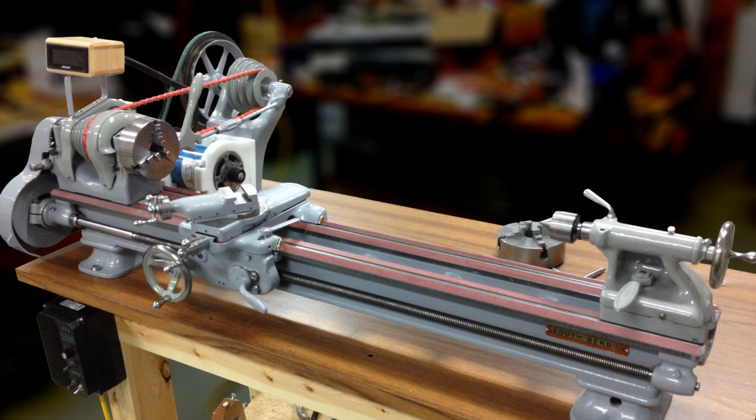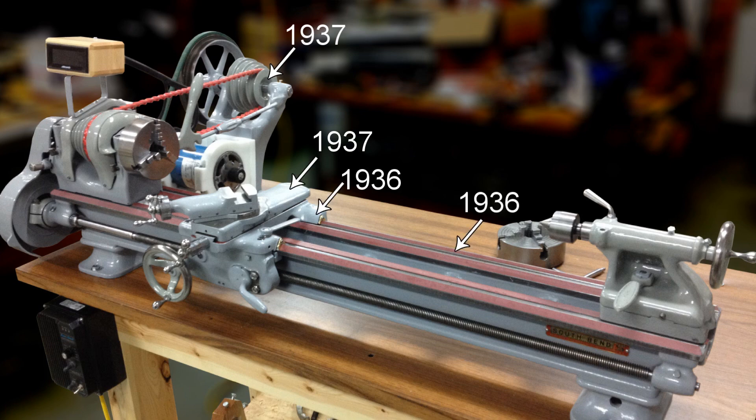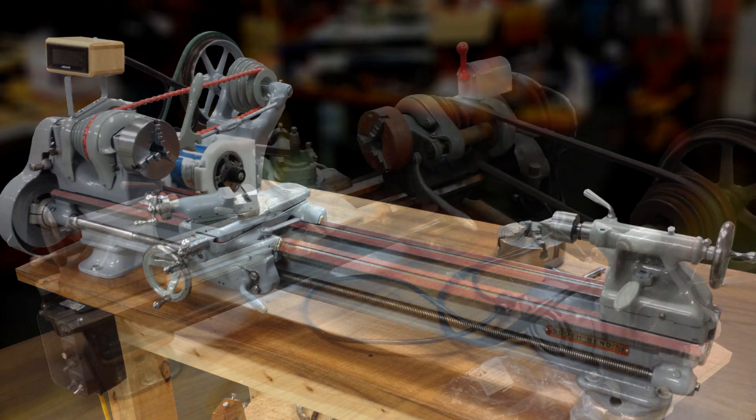Here is the completed lathe made with parts from two lathes, one from 1937 and the other built in 1936. But it is mostly made up of the 1937 lathe since the 1936 model was missing a lot of parts.